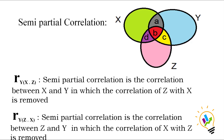Now we have something called semi-partial correlation. In partial correlation, we remove the correlation of the third variable with both variables. In semi-partial correlation, we only remove the correlation of z with x, not with y. You can see the notation r_y(x·z) — the bracket indicates that only x is adjusted for z. So z still has correlation with y, but z's correlation with x is removed. Only the db portion is removed, while the c portion remains.